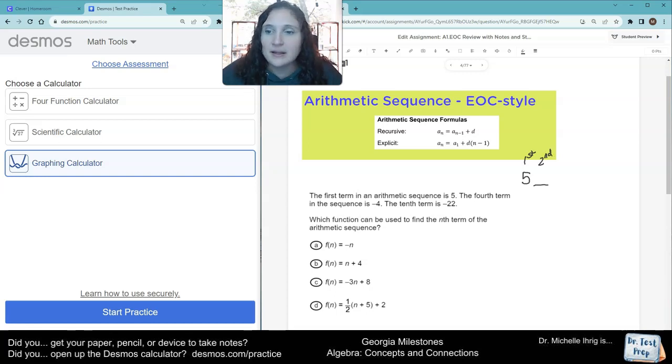The second number, we don't know what it is. The third number, we don't know what it is. But we know that the fourth number is negative four. And we know that the 10th number is negative 22. Okay, get ready for your mind to be blown because this is crazy easy.